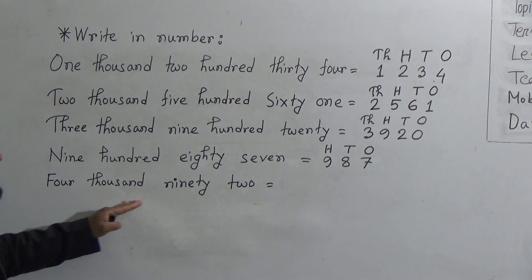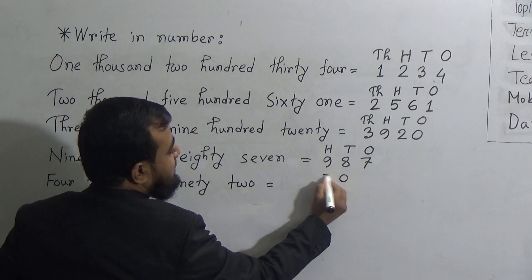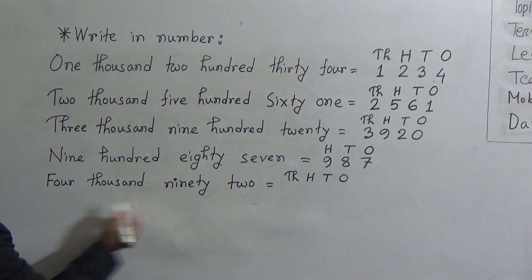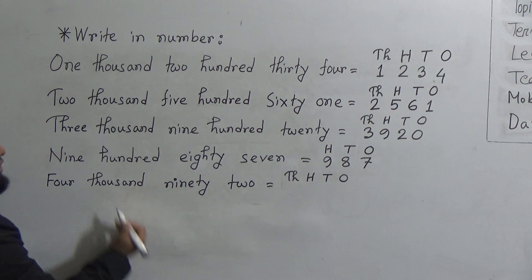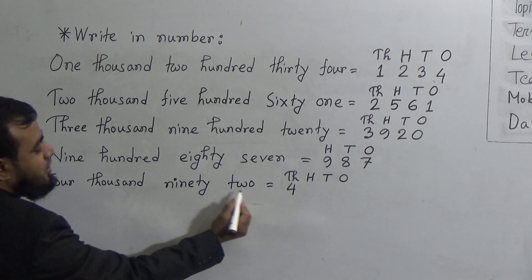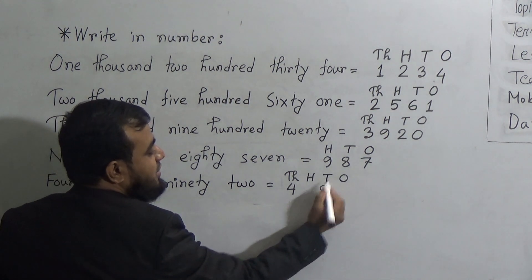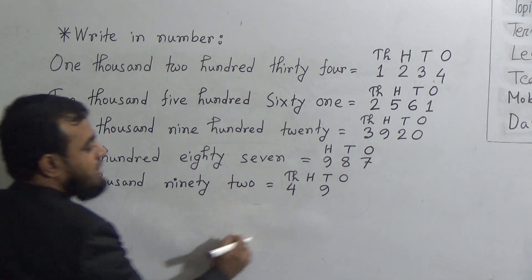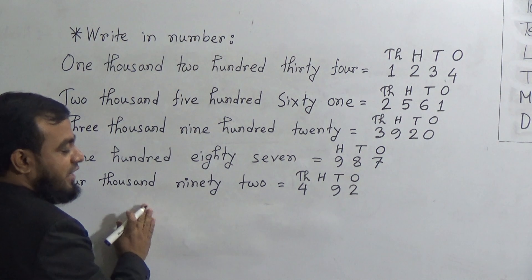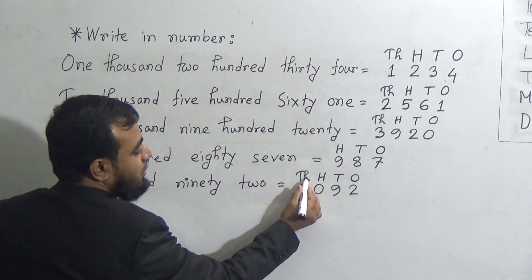The last number is 4,092. We need all 4 places: ones, tens, hundreds, and thousands. First, 4,000 means we fill the thousands place with 4. There is no 100 here, so we have 92. 90 means we fill the tens place with 9. And 2 means we fill the ones place with 2. Since hundreds is absent, we fill that place with 0. So the number is 4,092.